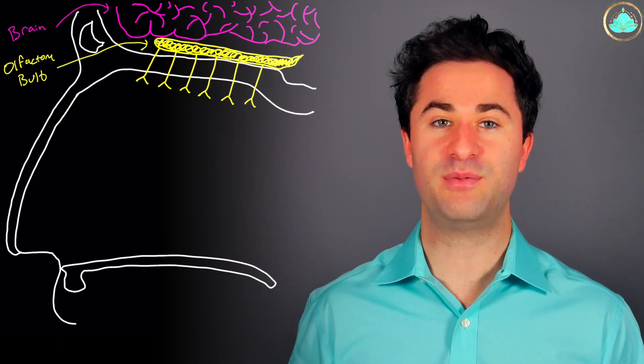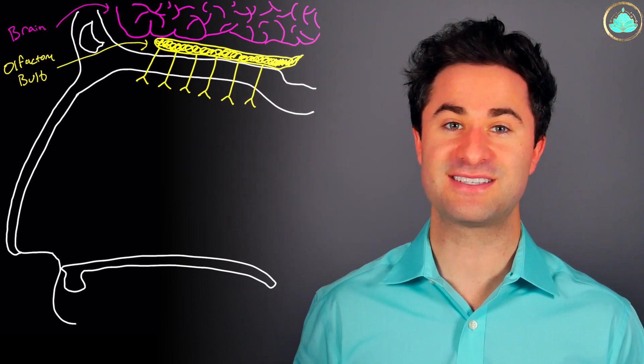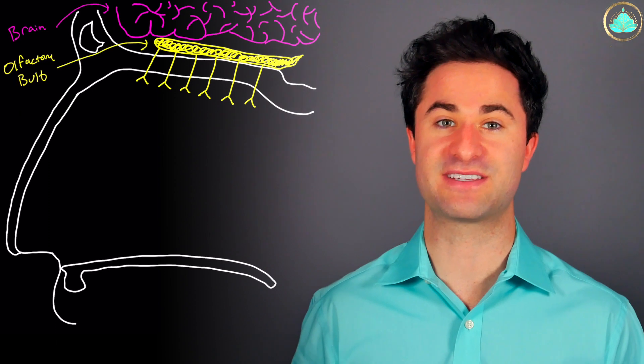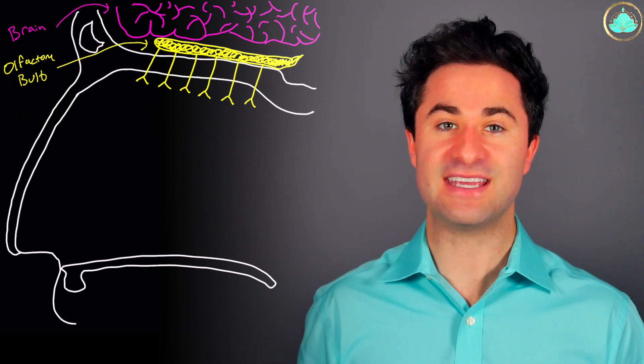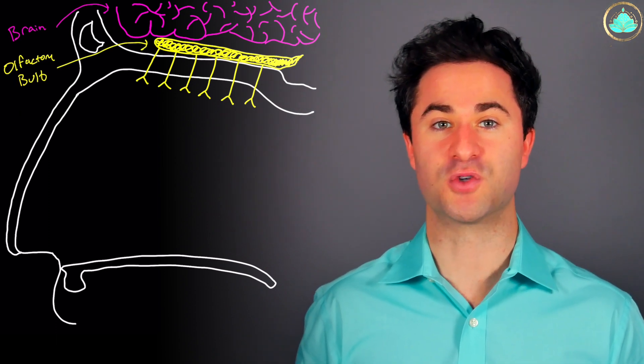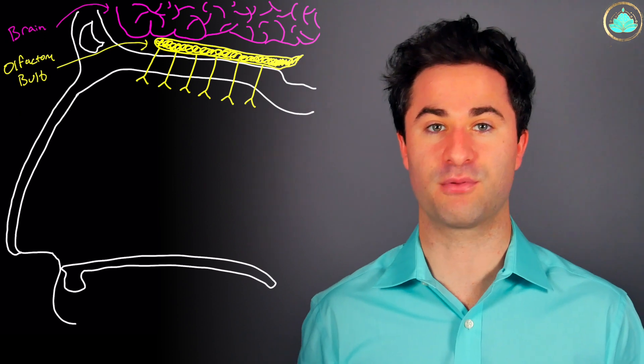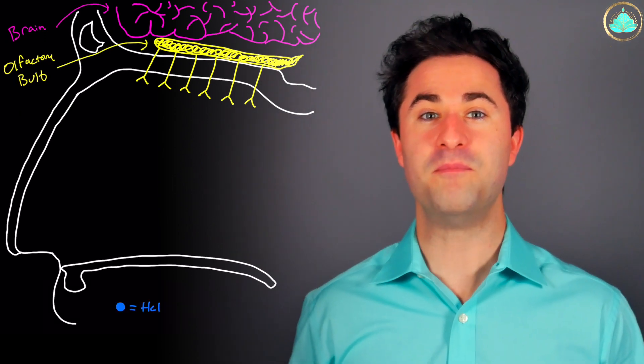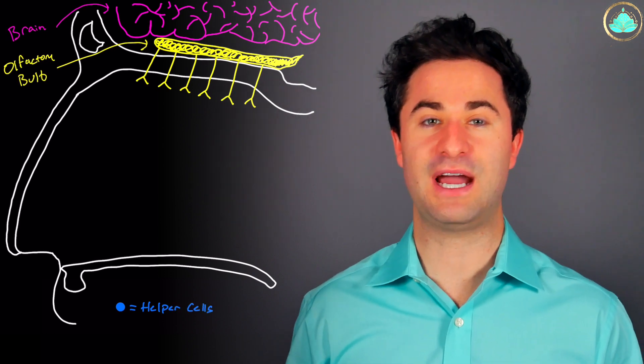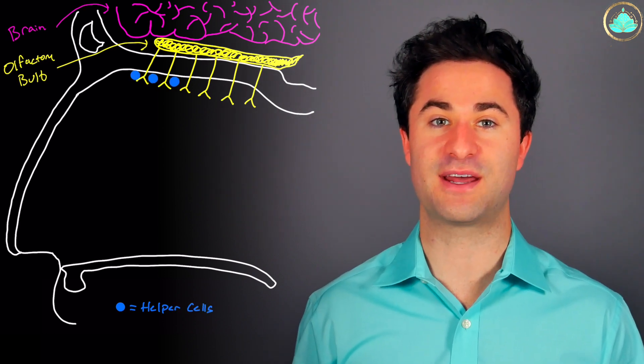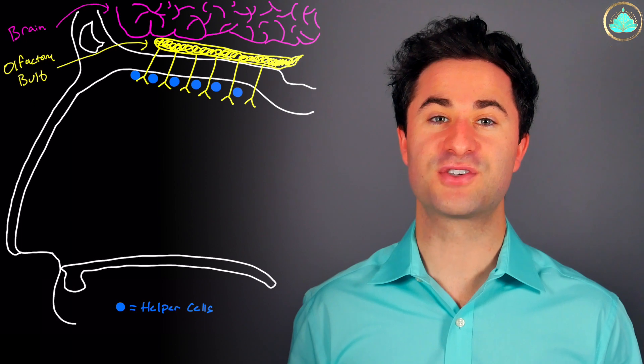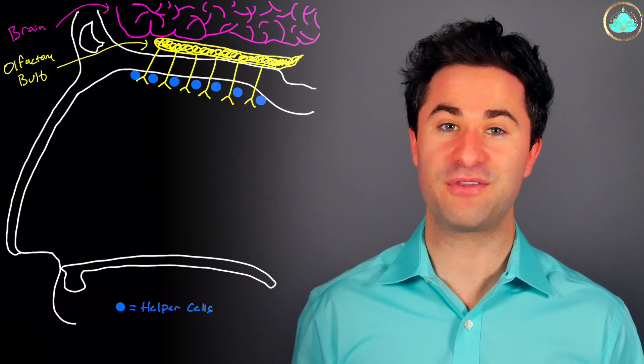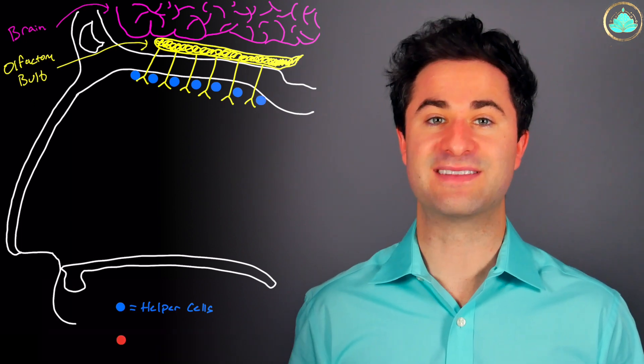The olfactory bulb is a collection of neurons that transmit specific signals, which in this case is your sense of smell directly from your nose to your brain. The olfactory bulb is very important, and there are many different cells that surround each one of the little neurons that are there in order to make sure each nerve can stay healthy and function properly.